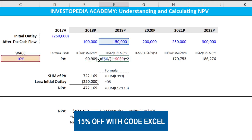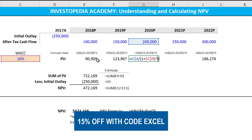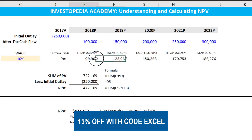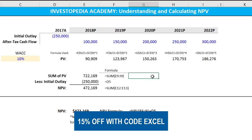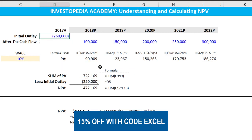Likewise, same thing for year two, same thing for year three. When we sum up all of these after-tax cash flows that have been discounted, we get the sum of the present values, and we can offset that by the amount that we spent in the first place to get the net present value.